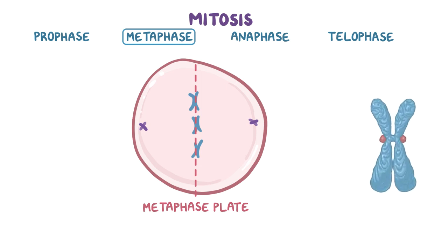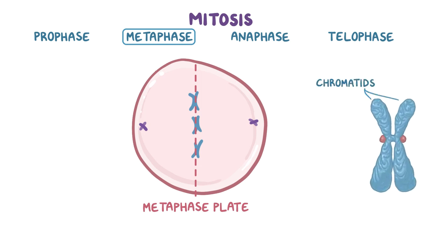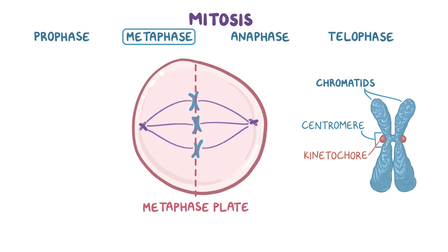Each chromosome is made up of a pair of sister chromatids, which are joined together in the centromere where there is a specific protein complex called the kinetochore. When the chromosomes are in place, each centrosome sends out thread-like projections called spindle fibers that attach to the centromere of each chromosome.